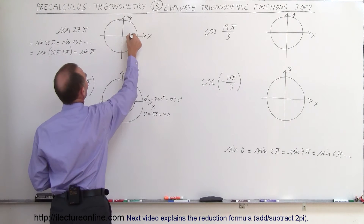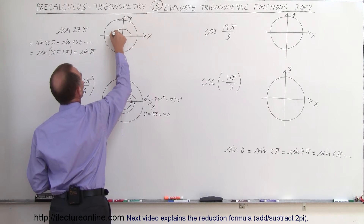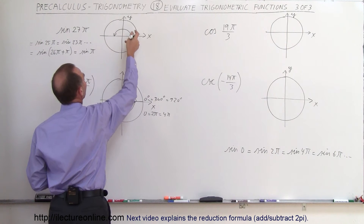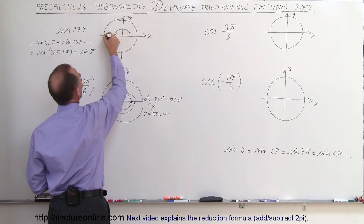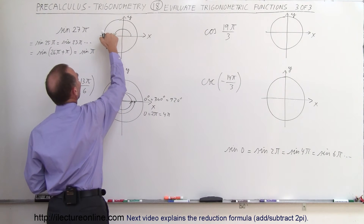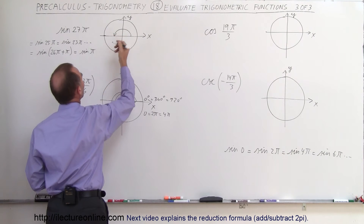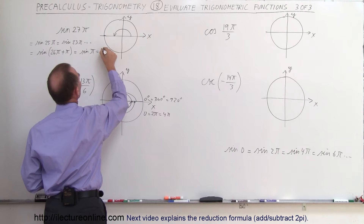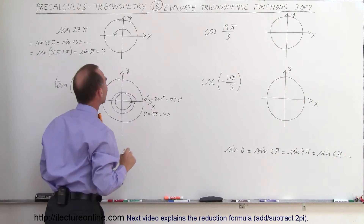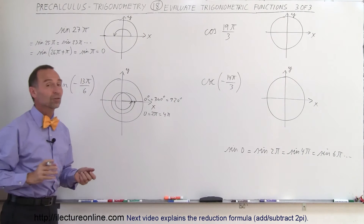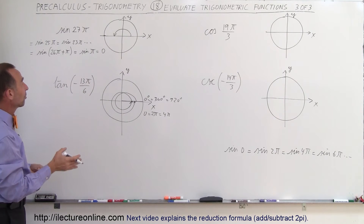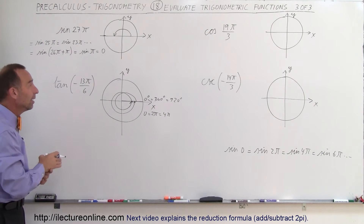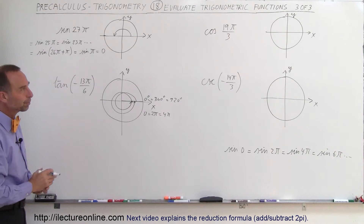Now π is 180 degrees, that gets us to that point on the unit circle, and the sine of 180 degrees means the y-value at that point is equal to 0, so you can simply call that 0. So the sine of 27π is the same as the sine of π, which is equal to 0.